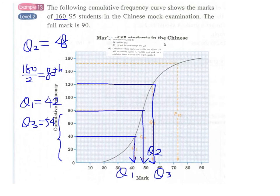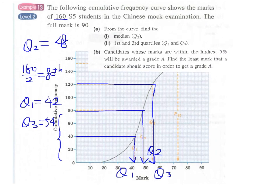And now for part B, again we have to find the highest 5% of the students, since the highest 5% will be awarded a grade A. Find the least mark that a candidate should score in order to get a grade A.